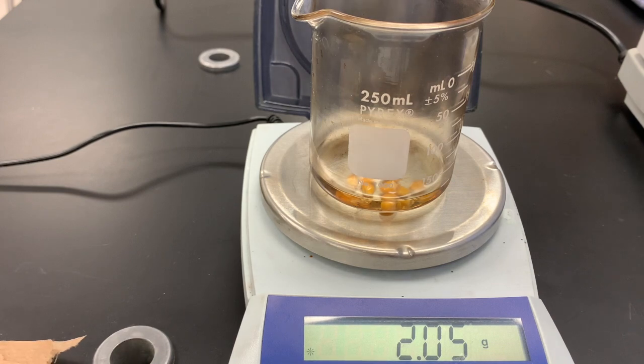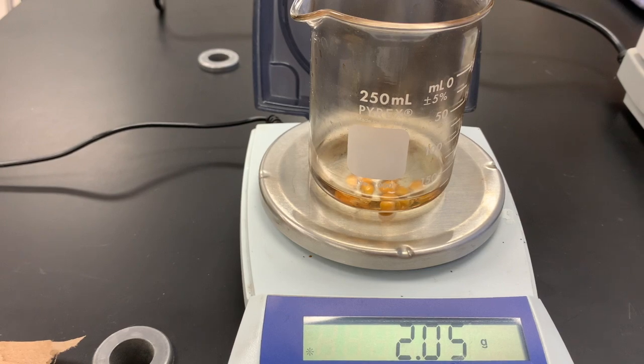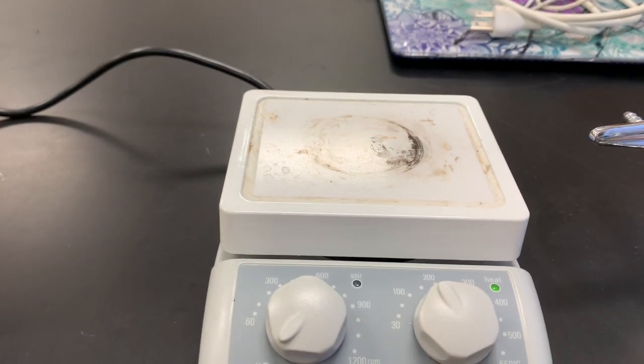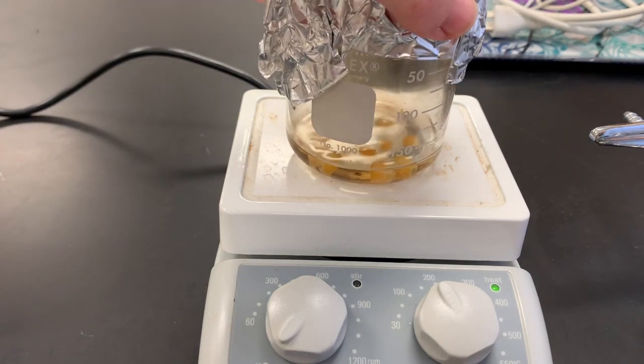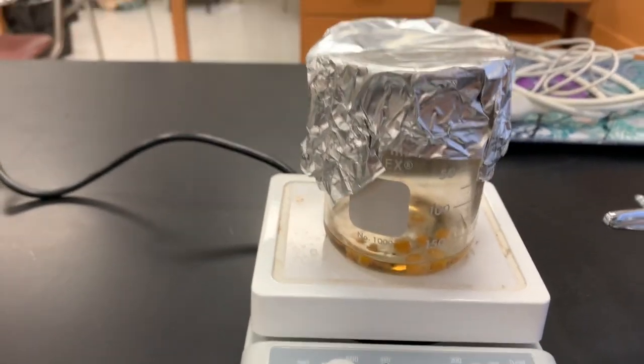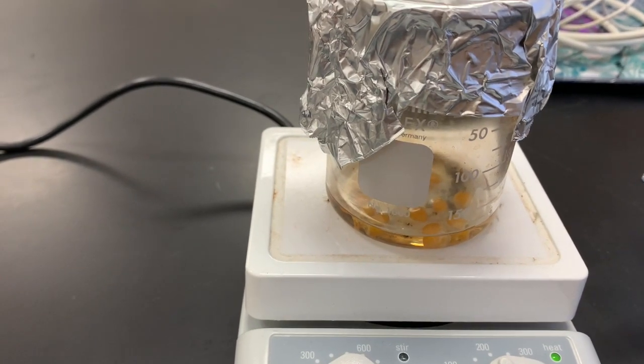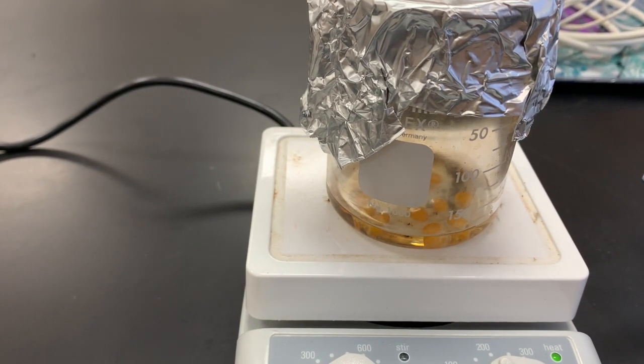So once we've gotten these, we are going to come over here to the hot plate. I'm going to put a piece of aluminum foil on the top of the beaker and I've also swirled it around to make sure all of the popcorn kernels are coated. So I'm going to put a piece of aluminum foil on the top so that it's kind of cased in, and I'm going to put it on this hot plate that I already have heating up at about 150 degrees Celsius. So we are going to now watch this as we get the popcorn to pop. I'm going to pause this video and start it up again when it starts to pop.